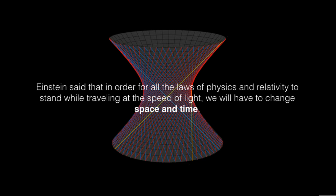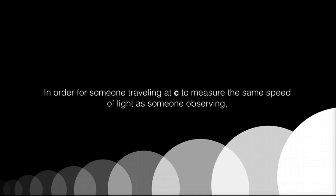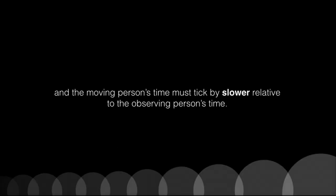Einstein said that in order for all the laws of physics and relativity to stand while traveling at the speed of light, we will have to change space and time. Einstein's conclusion was this: In order for someone traveling at C to measure the same speed of light as someone observing, the person must actually contract in the direction that it is moving, and the moving person's time must tick by slower relative to the observing person's time.